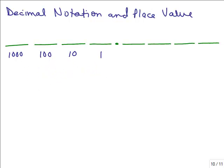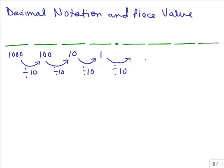Now let's go the other way. If you were at 1,000, how would you get the next place value to the right? You'd divide 1,000 by 10 to get 100, divide 100 by 10 to get 10, and divide 10 by 10 to get 1. If we kept going, taking 1 and dividing by 10, we can write that as the fraction 1 over 10 — this is the one-tenth place. Decimals are a special way of writing certain kinds of fractions, so understanding fractions really helps decimals make sense.